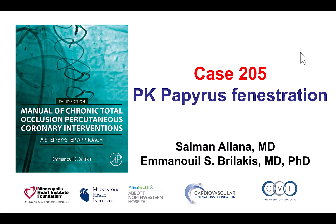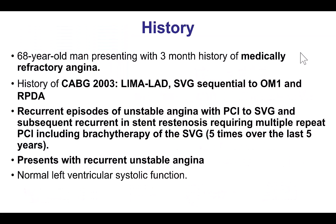This is a case of fenestration of a PK papyrus stent. The patient had previous coronary bypass graft surgery with LIMA to LAD and a sequential vein graft to the first obtuse marginal and the PDA, and had several episodes of unstable angina due to in-stent restenosis of the SVG. He had multiple PCIs, including brachytherapy of the saphenous vein graft, and now returns with unstable angina.